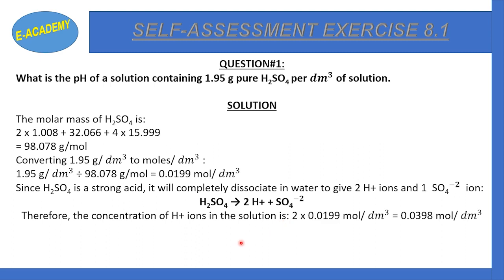The concentration of H⁺ ions in the solution is 2 × 0.0199 moles per dm³, because each H₂SO₄ molecule produces 2 H⁺ ions. So the concentration of hydrogen ions is 0.0398 moles per dm³.